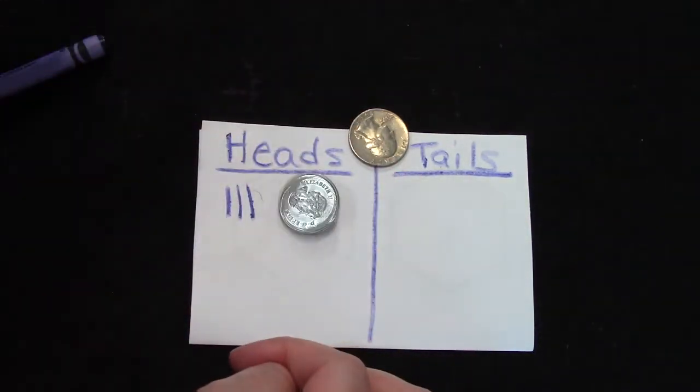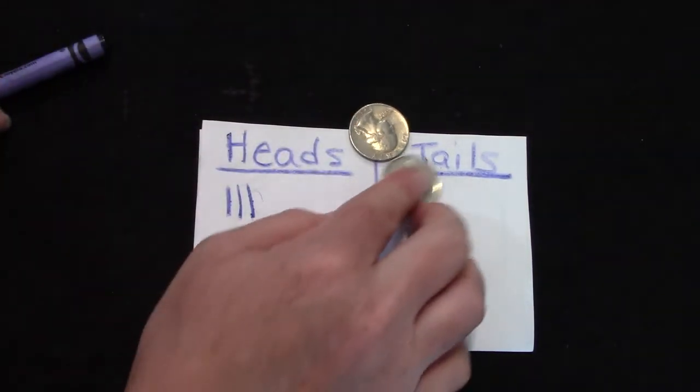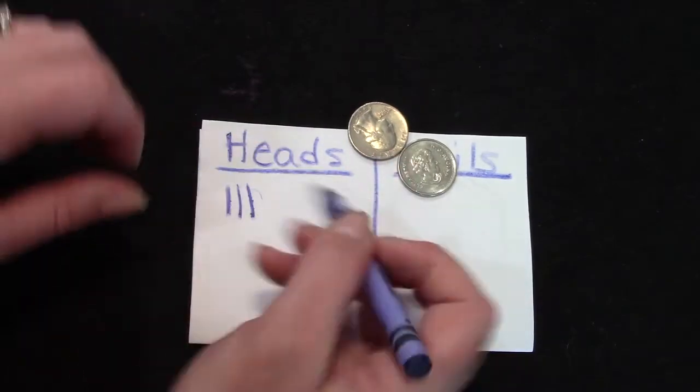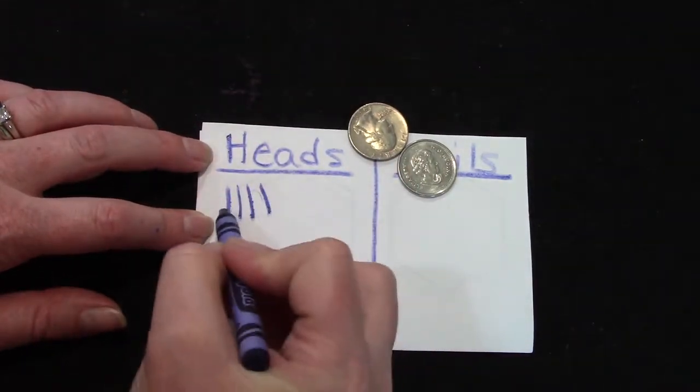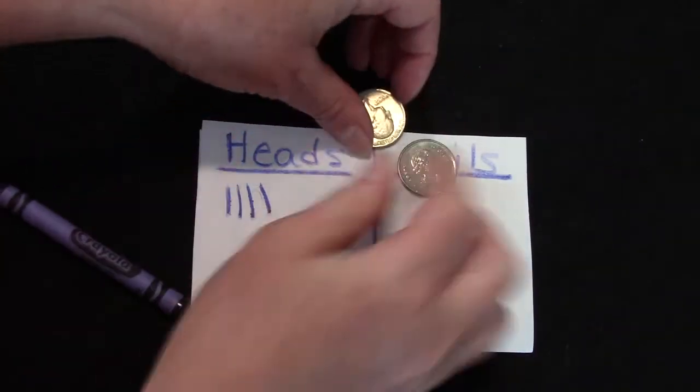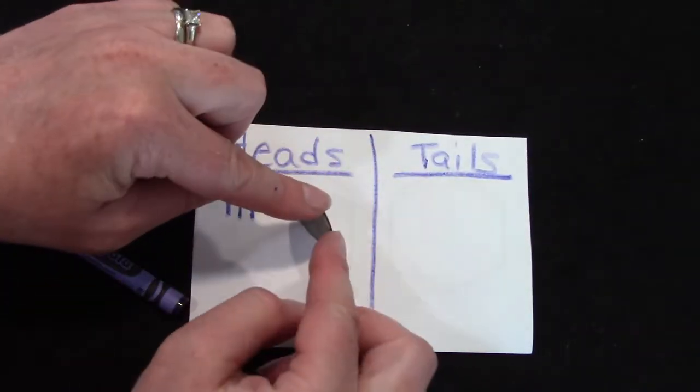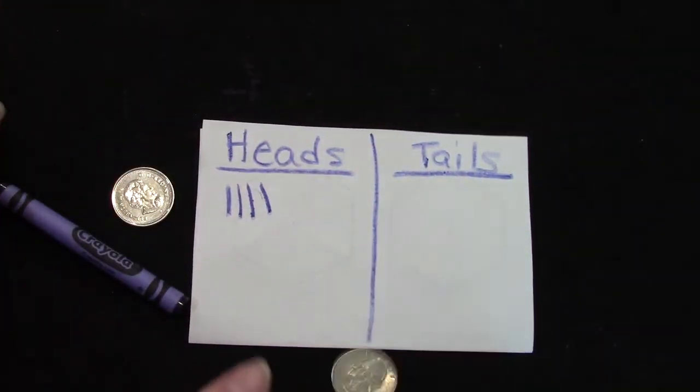Are we ready? Oh! Oh that is the Canadian one. We now have one, two, three, four heads. That's strange that I haven't gotten any tails, isn't it? You can try this at home.